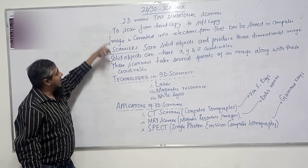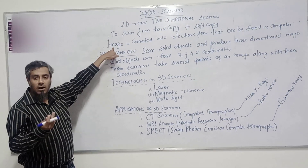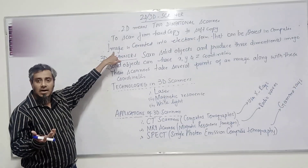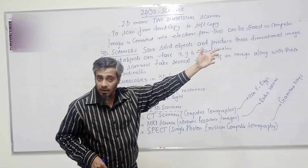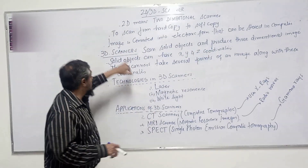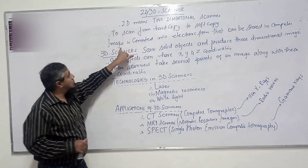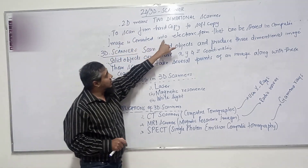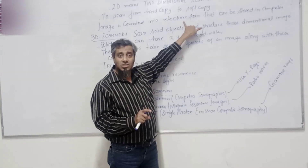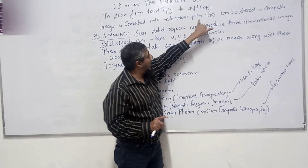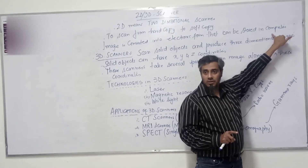Furthermore, all scanners are essentially 2D scanners. You have photocopy machines — those are scanners as well. Those are examples of 2D scanners. The image is converted into electronic form, that is digital form, that is 0s and 1s form, and it can be stored in the computer later on.